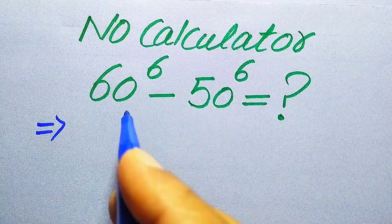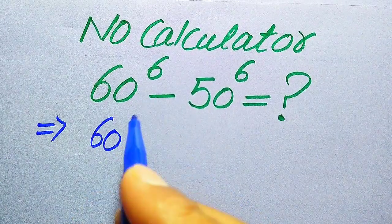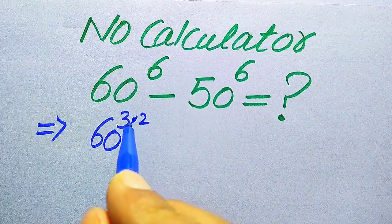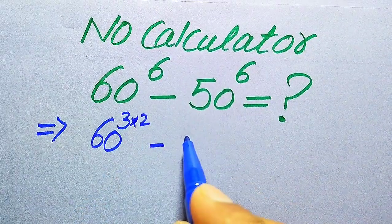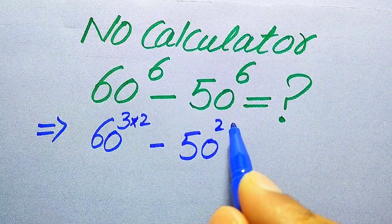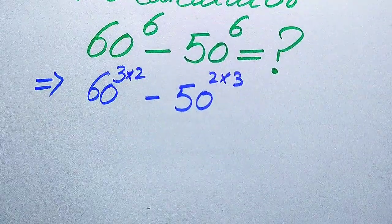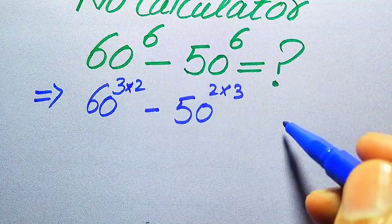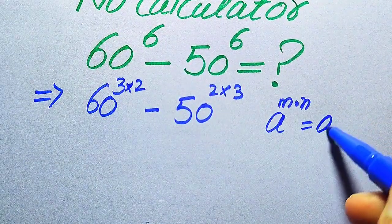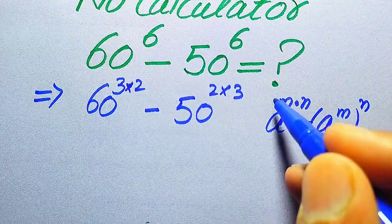In this method, first we rewrite the equation: 60 to the power of 6, where we write the exponent 6 as 3 multiplied by 2, minus 50 to the power of 6, written as 2 multiplied by 3. Further, we use the exponential law: if we have a to the power of m multiplied by n, we write it as a to the power of m, to the power of n.